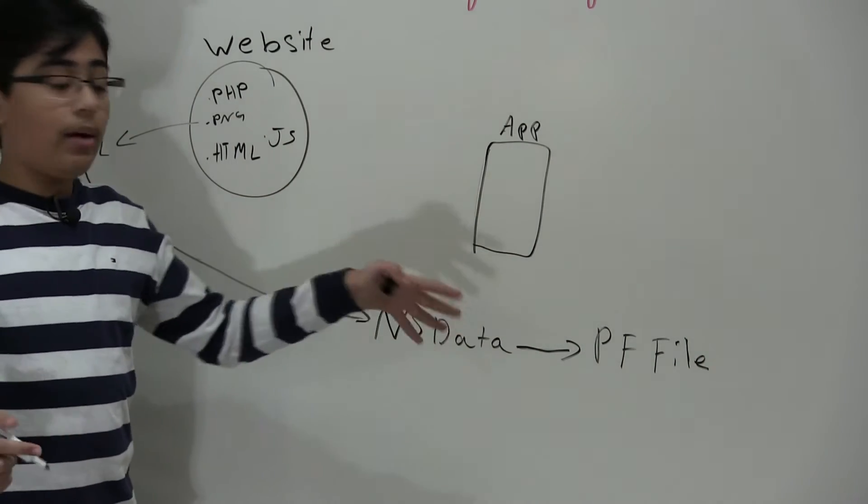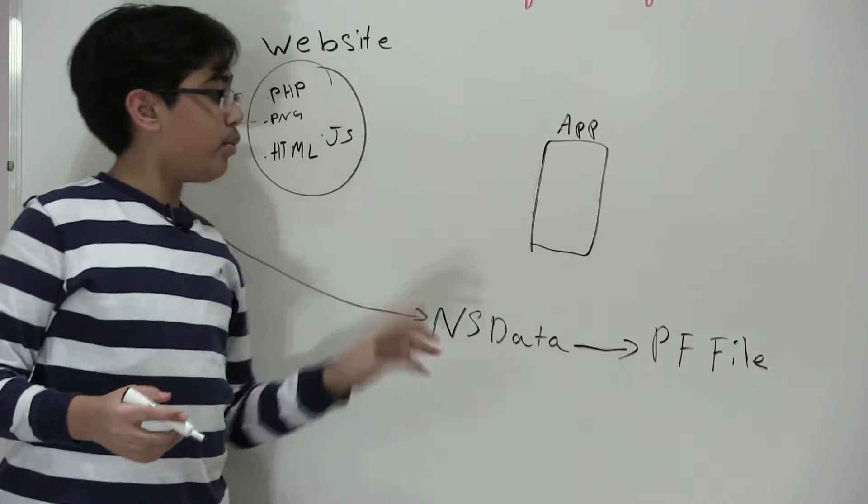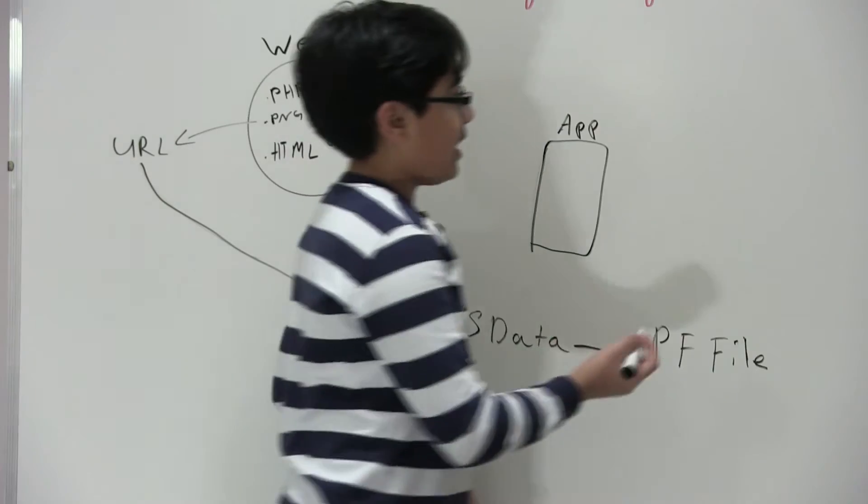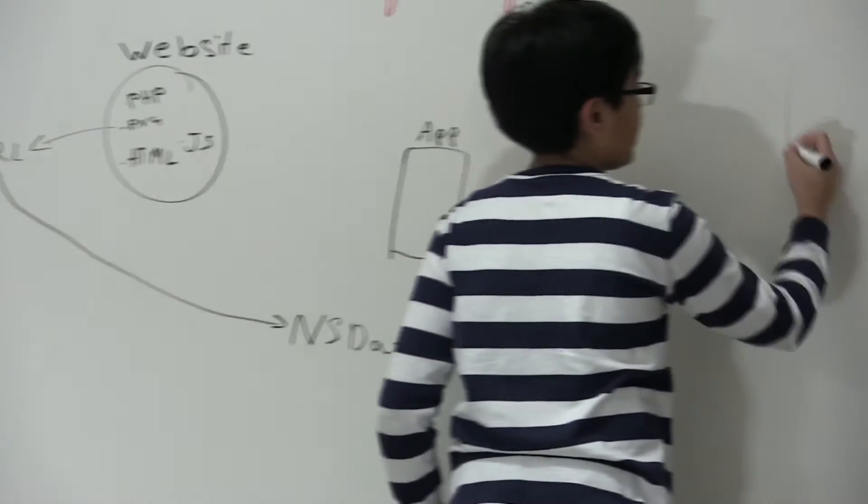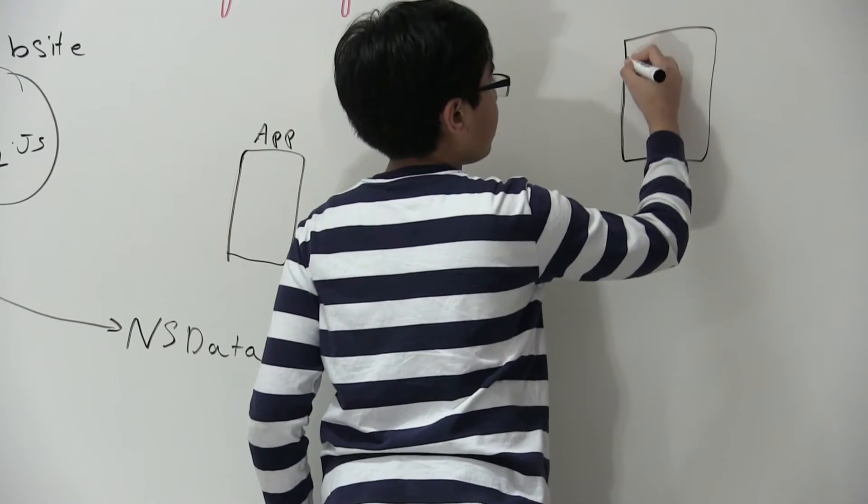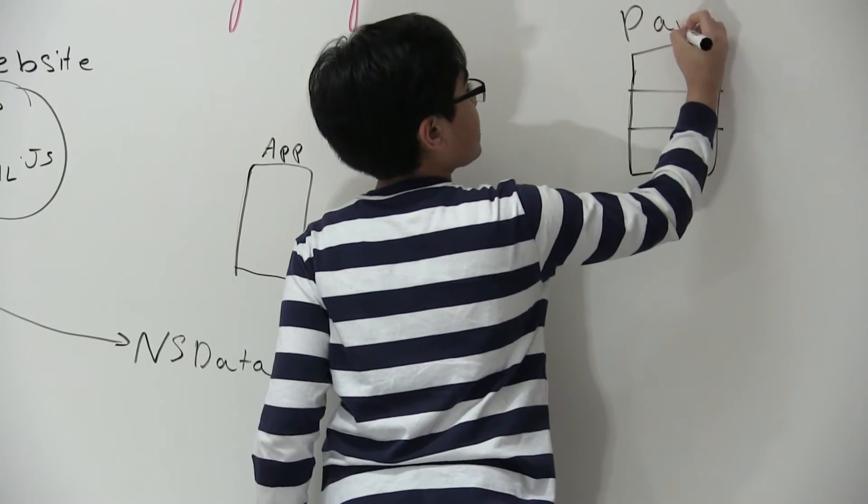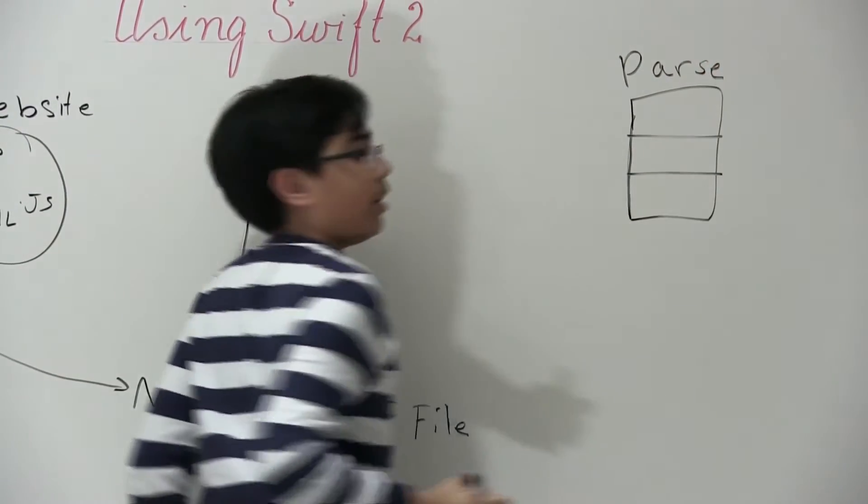And it's called PFFile. So now essentially this class will allow us to store the NSData as a PFFile, and then we will be uploading this to parse. And so let's just say our parse database is over here.